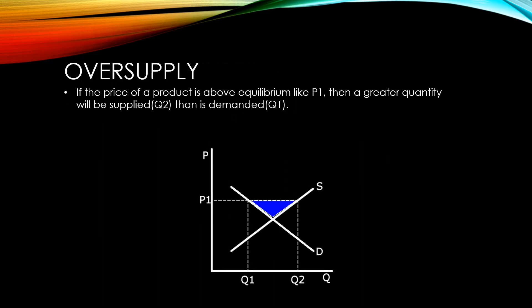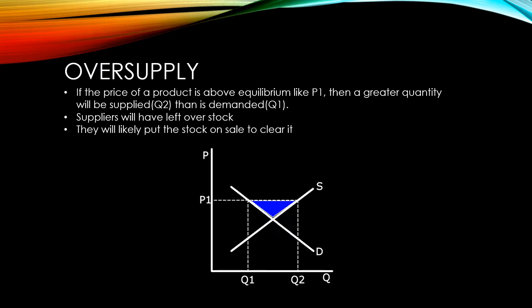If a product is priced above equilibrium, like in this example at P1, then there will be a greater quantity of that product supplied than is demanded. This will mean suppliers will have leftover stock. The traditional thing to do is to put that stock on sale to clear it, hence moving it back towards equilibrium price.